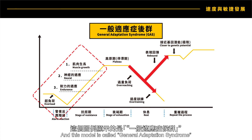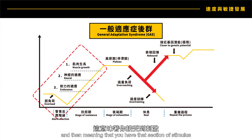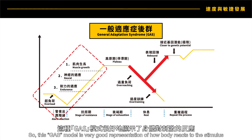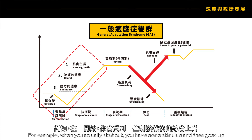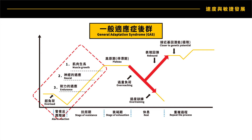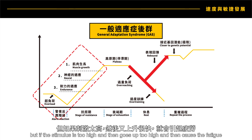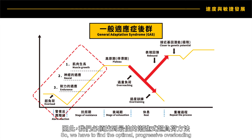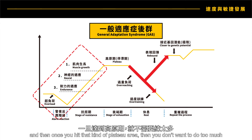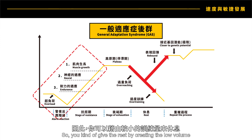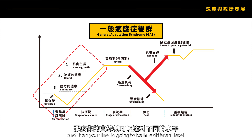This model is called the General Adaptation Syndrome (GAS), meaning there is a section of stimulus, then how your body adapts to it, how you recover, and how you gain fitness. It's a very good representation of how the body reacts to stimulus. When you start out, you apply stimulus and performance rises — but if stimulus is too high it causes fatigue. We have to find the optimal progressive overloading. Once you hit a plateau, doing too much causes over-fatiguing, so you give a low-volume rest period to recover and adapt, and then your fitness level rises to a new level.